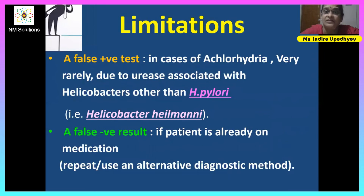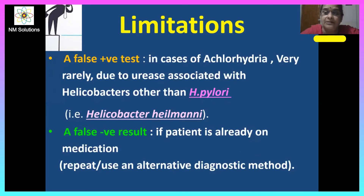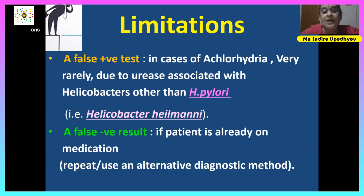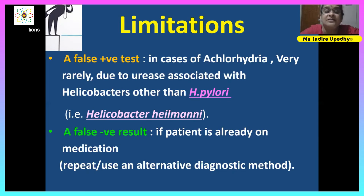Limitations: a false positive can occur in cases of achlorhydria, where the stomach lacks normal acidic conditions, and other urease-producing organisms that survive in non-acidic conditions — for example, Helicobacter heilmannii — can also degrade the 14-carbon urea capsule, so the test would not be exclusively detecting H. pylori. A false negative result can occur when the patient has not stopped their medication as required; in that case, stop the medication and repeat the test or use an alternative diagnostic method.